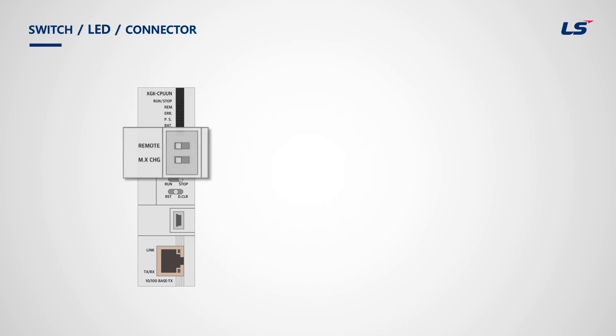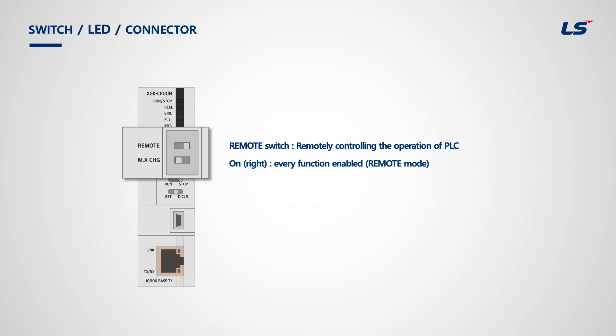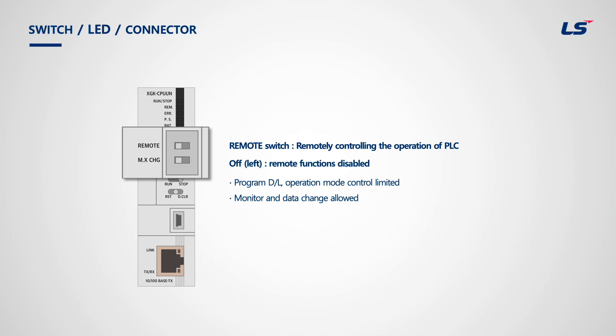Next are the switches. The Remote Switch helps remotely control the operation of the PLC from a PC. When the switch is moved to the right, all remote functions are enabled. But when it's moved to the left, the remote function is disabled — monitoring and data change are allowed, however program download and operation mode control are limited.